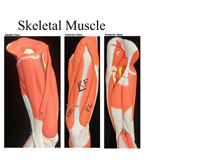Medial to the rectus femoris, we have the vastus medialis; lateral to it, the vastus lateralis; and posterior to the rectus femoris, we would see the vastus intermedius. Together, the rectus femoris, vastus lateralis, vastus medialis, and vastus intermedius are four muscles that form the quadriceps femoris — named quadriceps because the root quadru means four. Also crossing from side to side in the anterior thigh, we see the longest muscle in our body, which is called the sartorius.